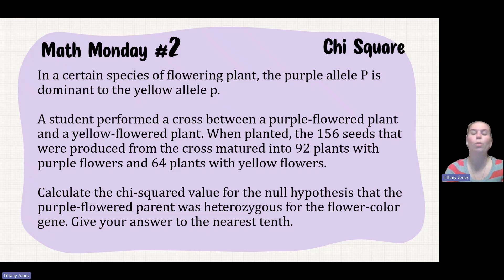There's a certain species of plant where purple is dominant to yellow. They do a cross between them in which they get 156 seeds. 92 of them are purple, 64 of them are yellow. We want to do a chi-square on this to determine if the purple flower was heterozygous, and we want to give our answers to the nearest tenth.